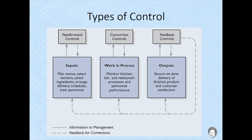Controls that apply to processes as they are happening are called concurrent controls. Examples include steering wheels and cruise control. Controls that focus on the results of operations are called feedback controls. Examples include measurements, comparisons, and budget reports.